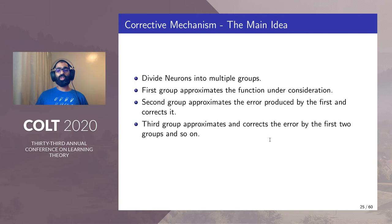The third group approximates and corrects the error produced by the first two groups and so on. Under certain conditions, we can do a corrective steps and this gives us a rate of error rate of 1/n^a.